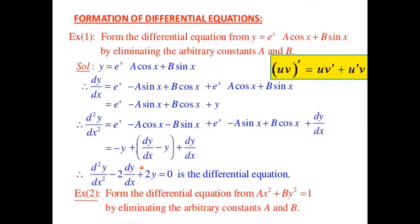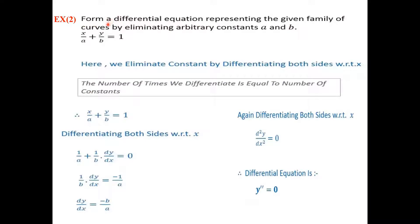For example: form the differential equation from y = e^x(A·cos x + B·sin x) by eliminating arbitrary constants A and B. Since there are two arbitrary constants, we differentiate twice to get dy/dx and d²y/dx², then substitute to eliminate A and B, obtaining a differential equation free from arbitrary constants.